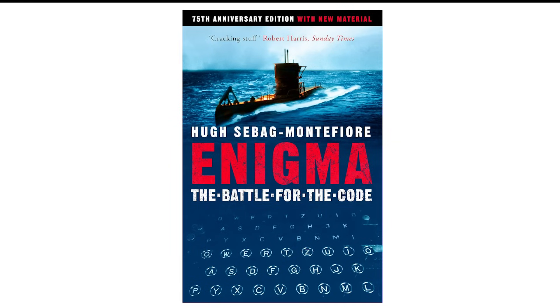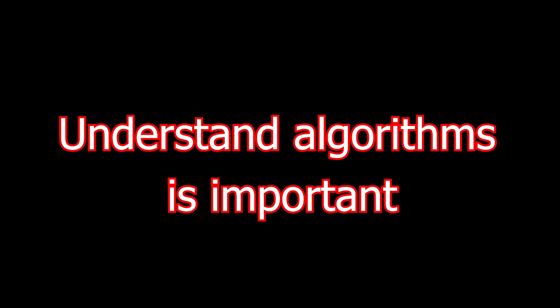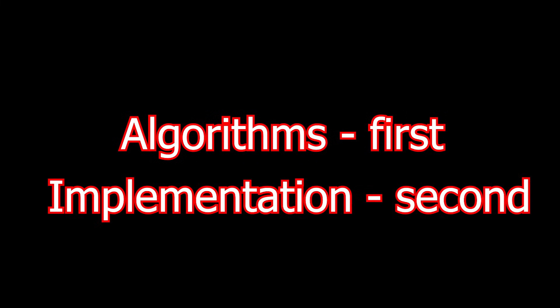To be fair, other reports like the book Enigma by Hugh Seabag Montefiore suggest that the British Navy had already deduced Bismarck's destination and the Enigma intercept only confirmed it. The point is that understanding how algorithms work is hugely important. I would argue more important than knowing how it's implemented, which is why I'm going over the algorithms first, implementation second.